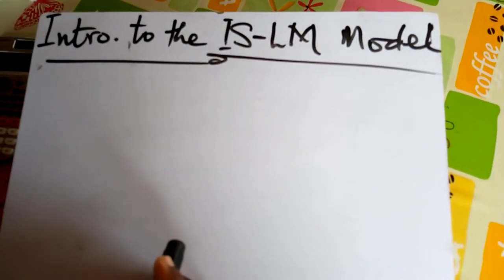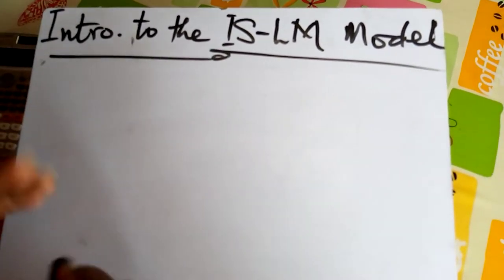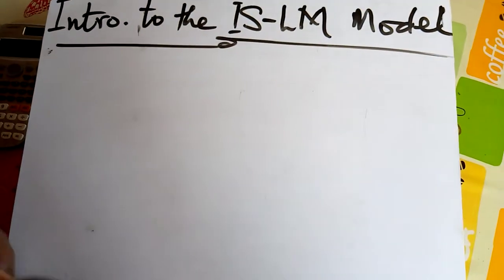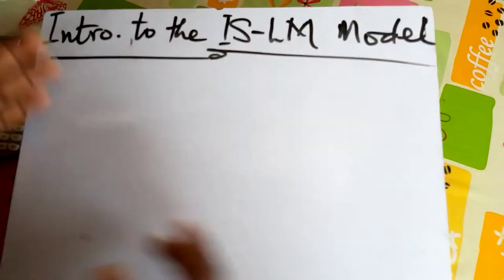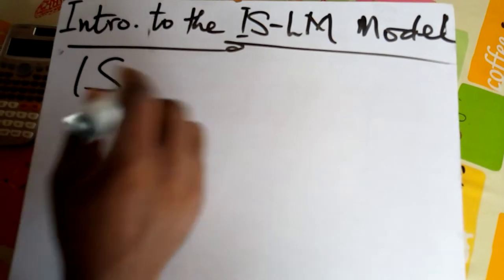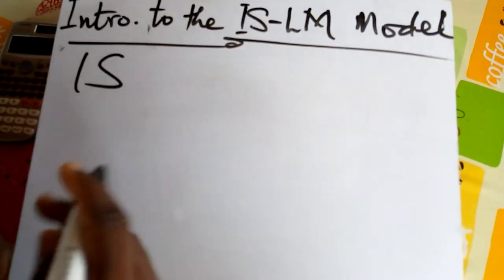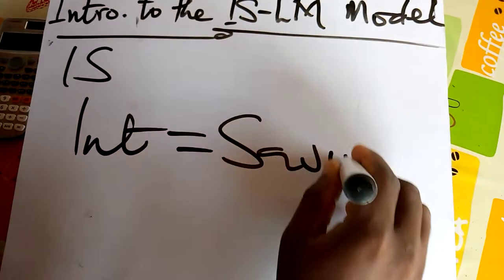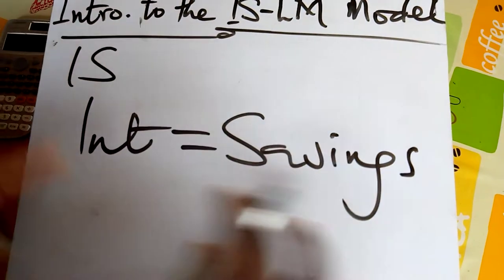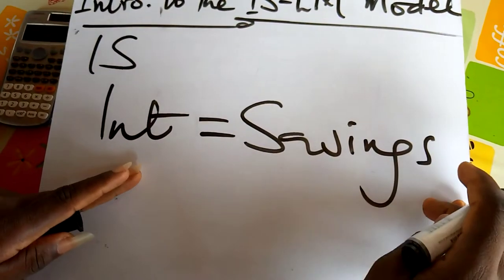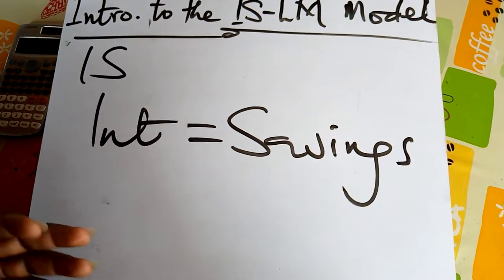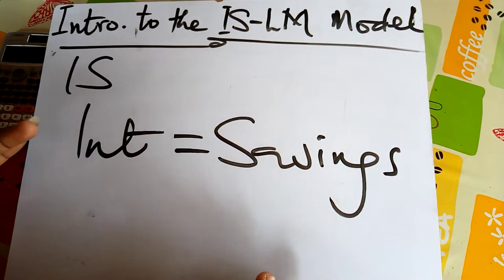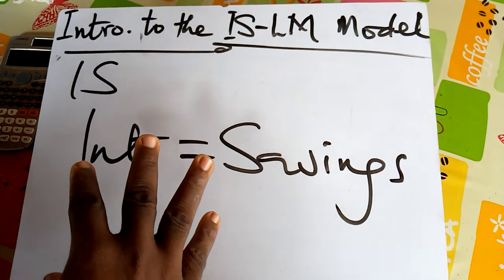Today we are treating the IS-LM model. The IS-LM model simply means the interaction between the goods market and the money market. Firstly, let's deal with the IS curve. IS stands for investment-savings, which means that investment should be equal to savings — this is an equilibrium condition. The IS is a curve of income-expenditure considering the market interest rate, which makes it a demand-side concept.